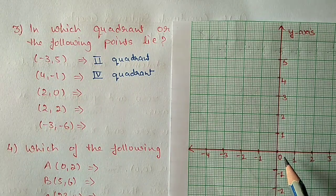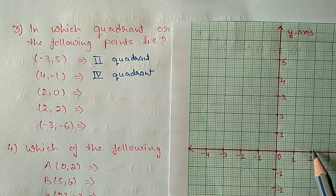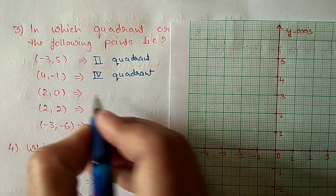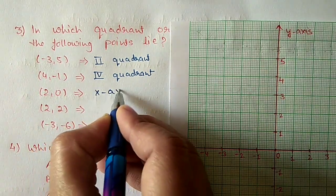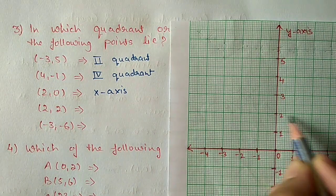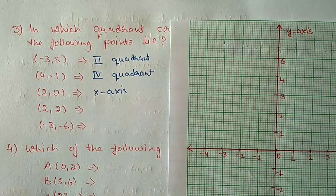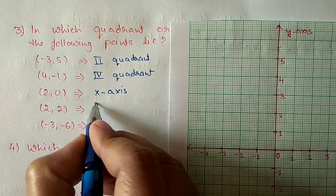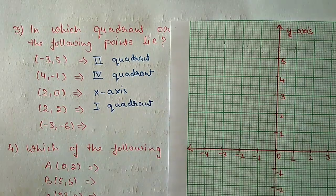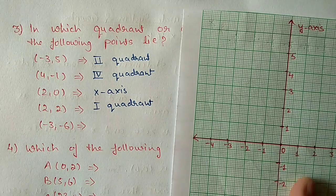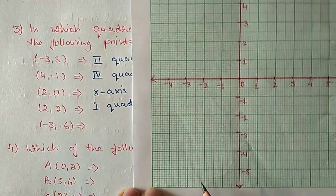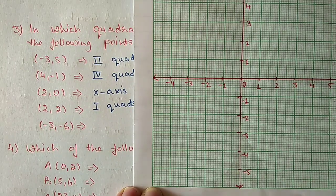Third point: (2, 0). Plot 2 on x-axis and 0 on y-axis — this point lies on the x-axis. Fourth point: (2, 2). Both values are positive — this point lies in the first quadrant. Fifth point: (-3, -6). Plot -3 on x-axis and -6 on y-axis — this point lies in the third quadrant.